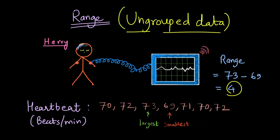Whether large or small variation is necessary depends on the context. To conclude, range is calculated by subtracting the smallest data point from the largest data point in the ungrouped data.